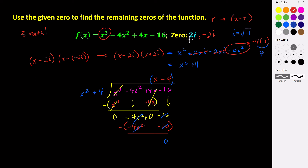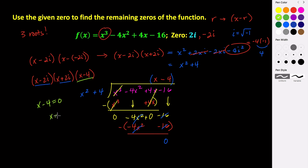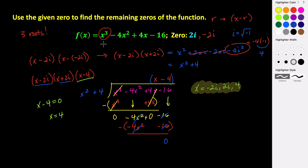So if we write our polynomial in factored form, it would be x minus 2i times x plus 2i times x minus 4. We already know our zeros of 2i and negative 2i from the first two factors. The last factor gives us x minus 4 equals zero, so x equals 4 is our last zero. All of the zeros are x equals negative 2i, x equals positive 2i, and x equals 4.